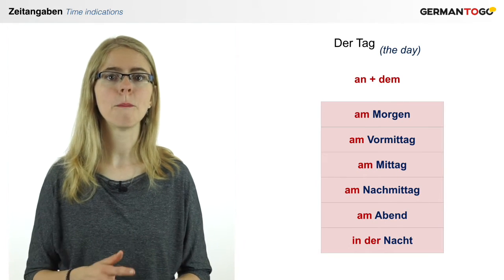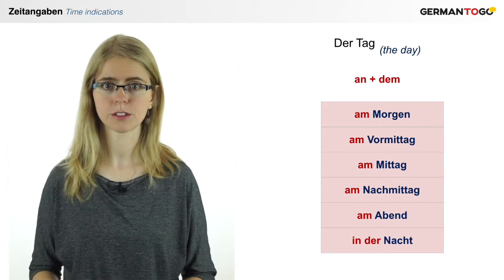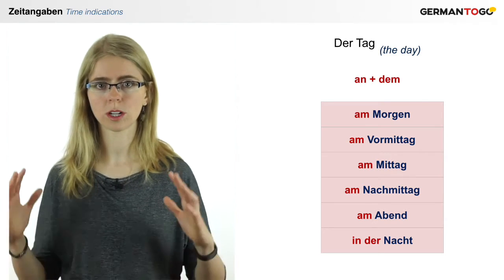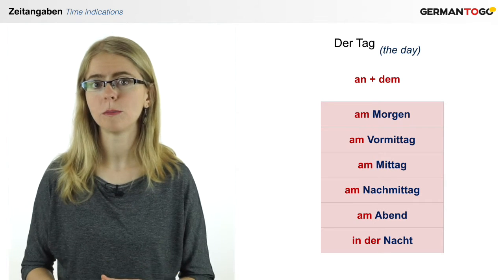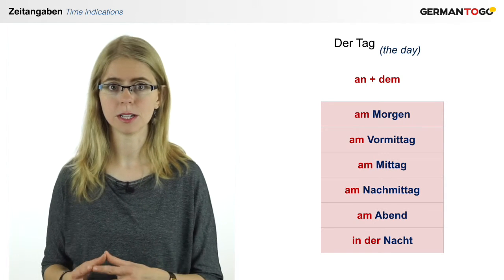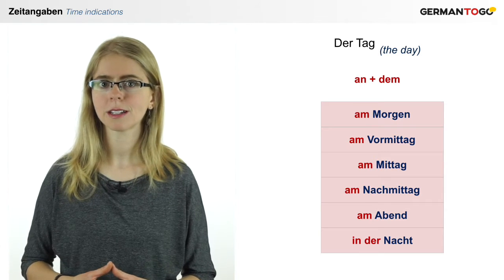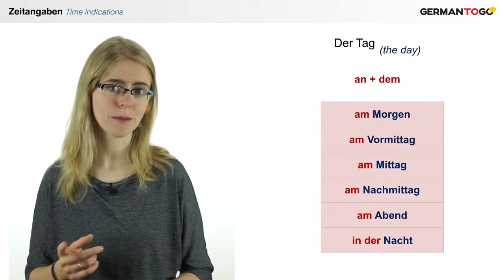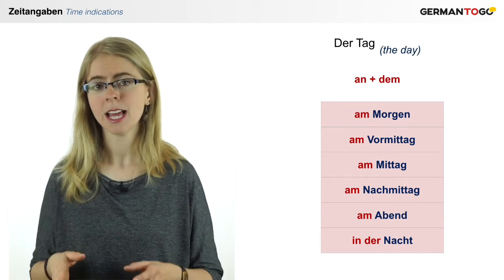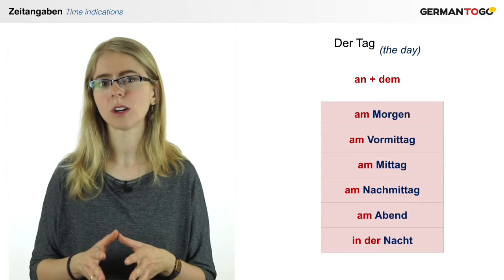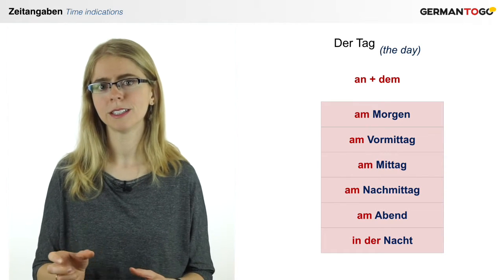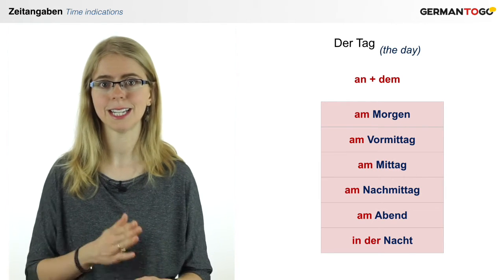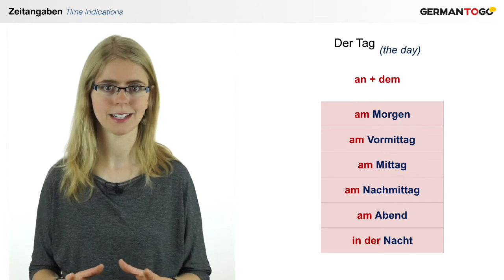In the morning is am Morgen. Again you have the preposition an plus dem, the dative case of der — an dem Morgen, am Morgen. Am Vormittag, am Mittag at noon, am Nachmittag, am Abend. Only Nacht is different — it's feminine and it's in der Nacht. In is also a dative preposition, and in the dative the feminine article die becomes der. It looks like it's masculine but it's not. In der Nacht — at night, in the night.